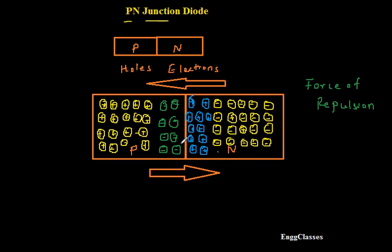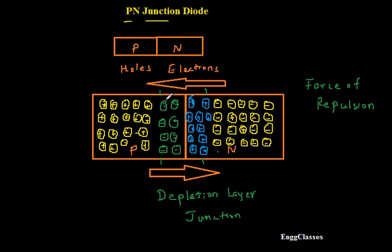Initially there was a process of diffusion; now it is stopped because of force of repulsion on either side. Whatever junction is formed at this point, I call it the depletion layer — also called the junction. Depletion means it is depleted, or free, of electrons and holes; it does not allow the movement of electrons or holes and is depleted of free ions. Hence the name depletion layer. As soon as P-type and N-type are combined chemically, a layer — a junction — is formed, hence the name P-N junction.